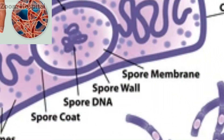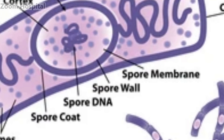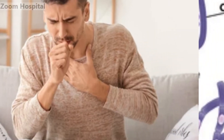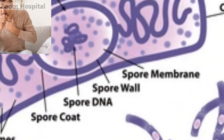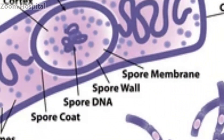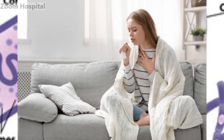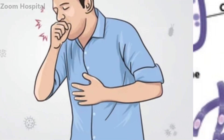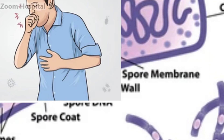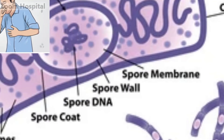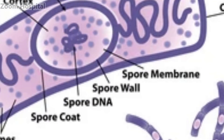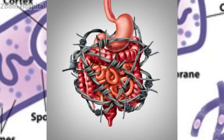2. Inhalation anthrax occurs when spores are inhaled into the lungs. Initial symptoms may resemble a common cold and include fever, fatigue, mild chest discomfort, and a cough. As the infection progresses, severe breathing difficulties, shock, and meningitis-like symptoms may develop.